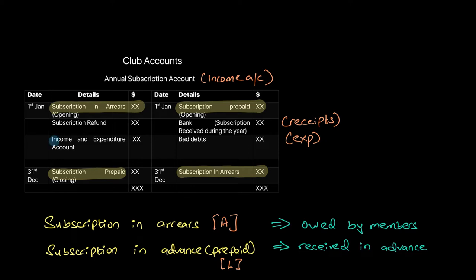The figure we are trying to locate is the income and expenditure amount — the amount that will go to the income and expenditure account as the annual subscription income, which is your primary source of income. When drawing the subscription account, one of our aims is to calculate this, but at times the income and expenditure might be available while some other item is missing. We'll go through two different cases and see how the annual subscription account looks under each.